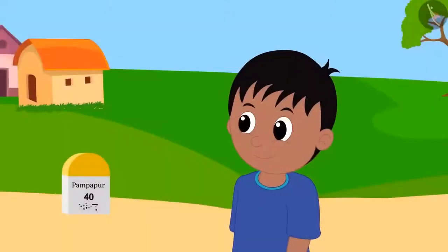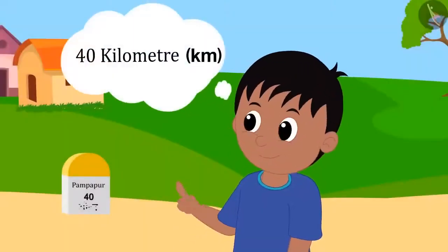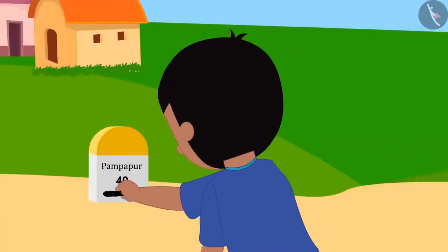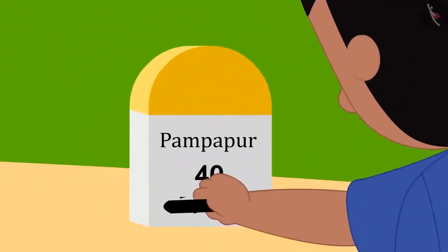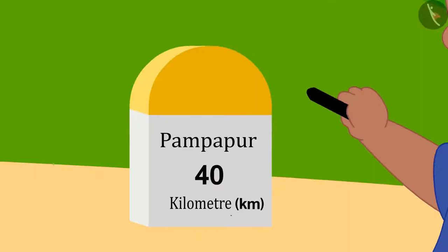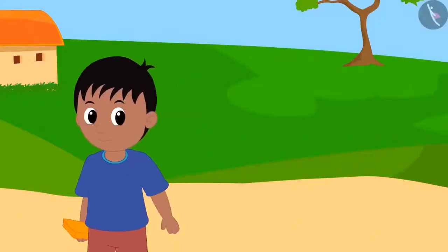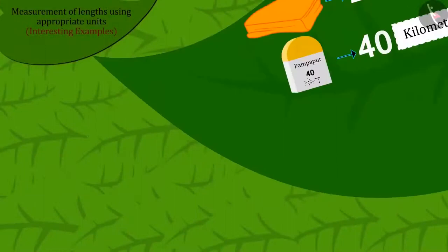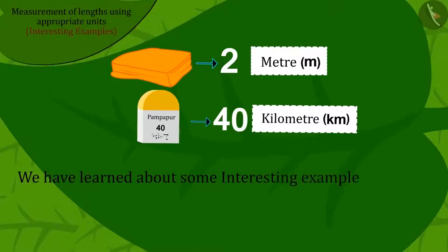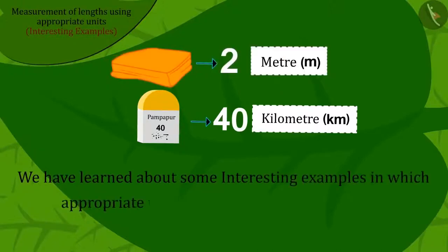Raju found the right answer with your help. He took a piece of coal and wrote 'forty kilometers.' In this video we have learned about some interesting examples in which an appropriate unit is used to measure the length or distance between objects.